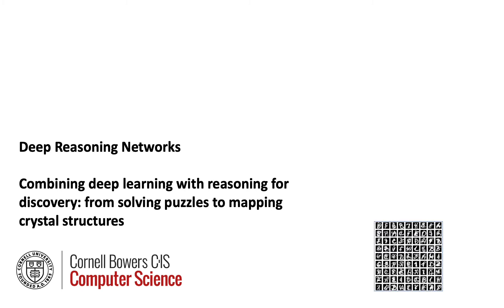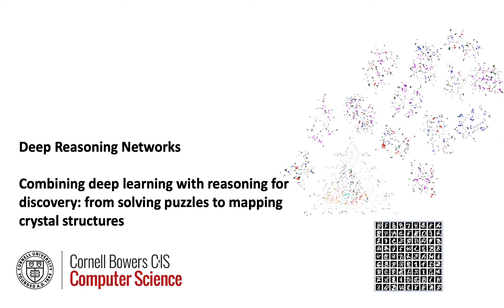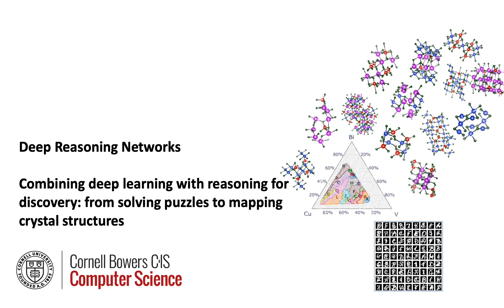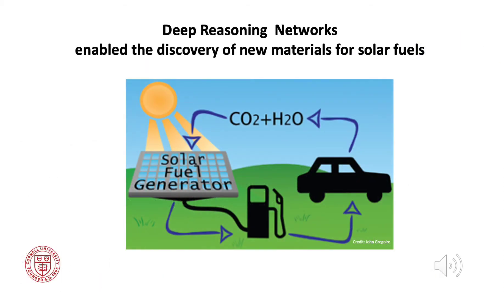Deep Reasoning Networks combine deep learning with reasoning for discovery, from solving puzzles to mapping crystal structures. Deep Reasoning Networks enabled the discovery of new materials for solar fuels. In contrast to standard solar panel energy, which depends on intermittent sunlight, solar fuels can be stored for later use.